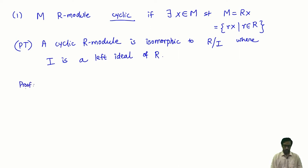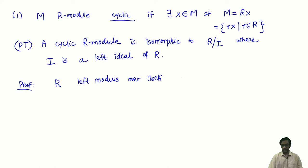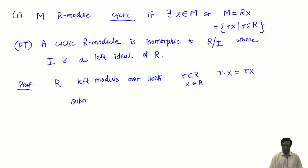Let us prove this. First, let us ensure we understand the definitions. Recall that if you have a left ideal of R, then R can be thought of as a left module over itself by left multiplication. I take a scalar r in R; the module is also R itself. If I have x in R, then r acts on x by the usual multiplication in the ring R. So R is a left module over itself, and the submodules for this module are exactly the left ideals.